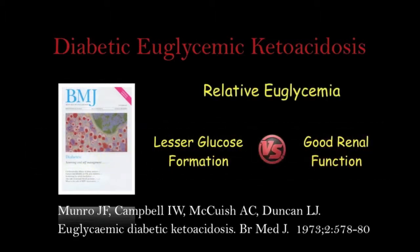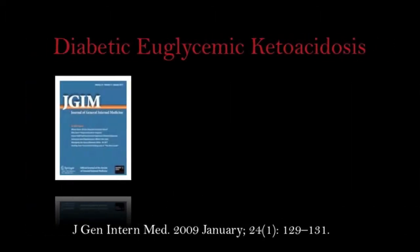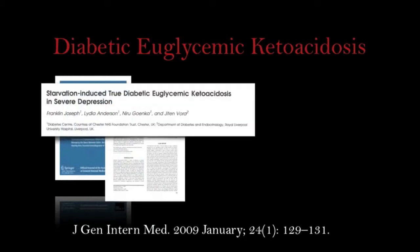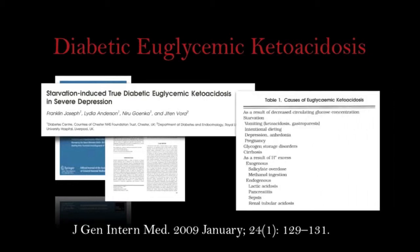Others commented, saying: is it really DKA? Maybe these patients were just having really good renal function, clearing all that glucose out, or maybe there was lesser glucose formation. But even today there are reports of diabetic euglycemic ketoacidosis. Looking in the Journal of General Internal Medicine back in 2009, there was a case report titled 'Starvation-Induced True Diabetic Euglycemic Ketoacidosis and Severe Depression.' This was a case report of a 34-year-old who presented with suspicion of DKA. He had a pH of 7.3 and an anion gap of 29, but his blood glucose was only 105 milligrams per deciliter. They found he was severely depressed and had not been eating for about two to three weeks prior to his presentation to the hospital. They commented on lots of different causes for euglycemic ketoacidosis, with depression and starvation being one of them.